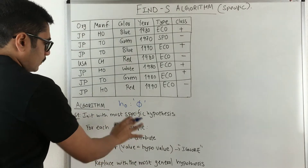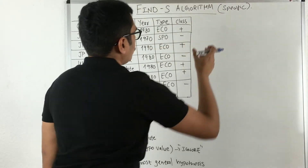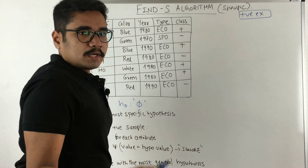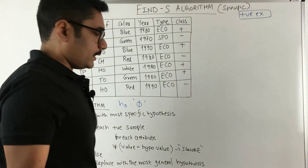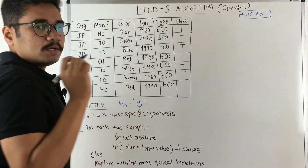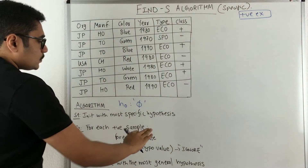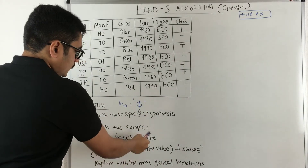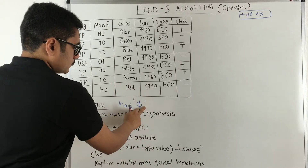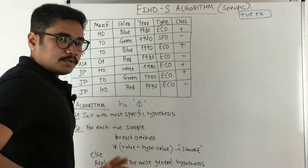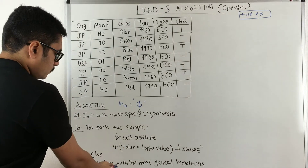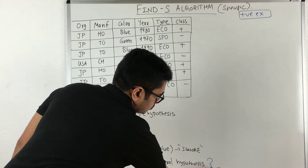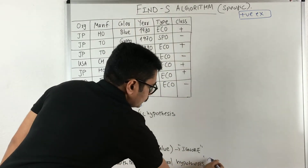Now, for each positive sample — one of the main points of the Find-S algorithm is that it considers only positive examples. Wherever you encounter negative examples, this algorithm will ignore them. For each positive example, and for each attribute of that example, it checks whether the attribute value equals the hypothesis value. If they are the same, you do nothing; otherwise, you replace it with the most general hypothesis, represented by a question mark.